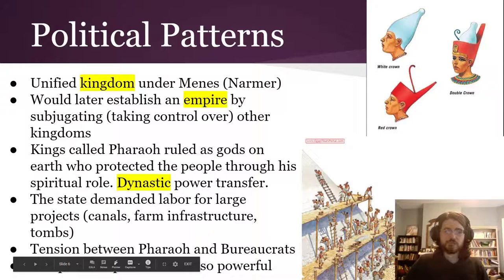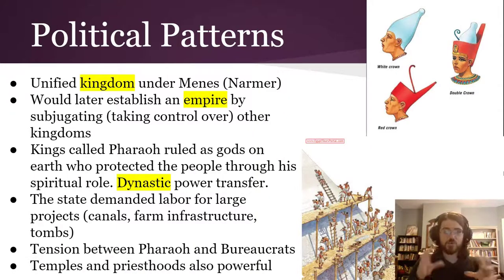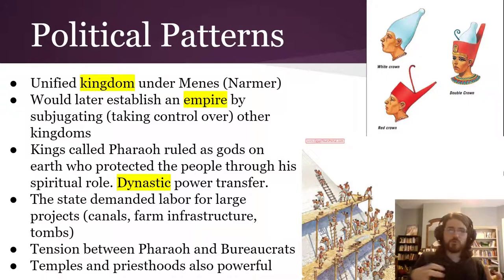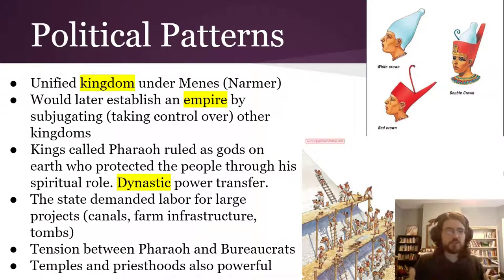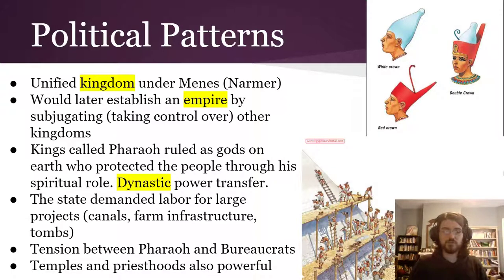There was tension between pharaohs and bureaucrats — the advisors, organizers, and people who did a lot of the paperwork. Those bureaucrats often tried to pull more power towards themselves, and then Egyptian pharaohs would pull back and try to centralize more. This tension plays out throughout Egypt's history. The temples and priesthoods were also very powerful, and while there wasn't often a lot of tension between pharaohs and priesthoods, there are some very specific examples of that which we will study in more depth later.